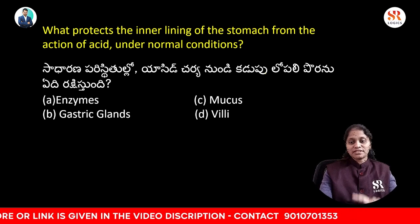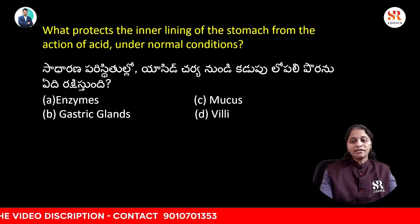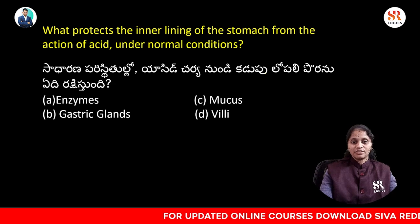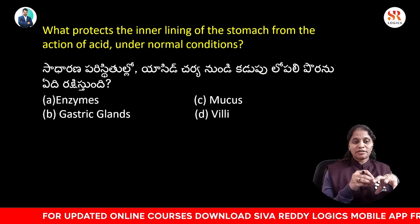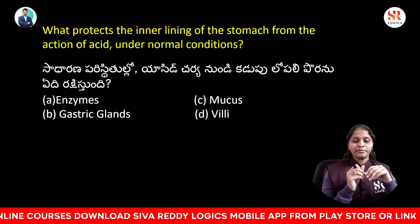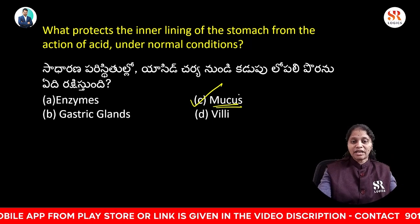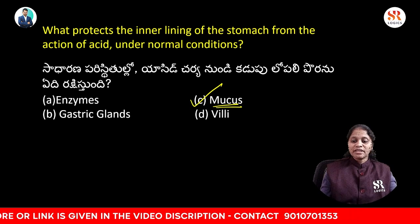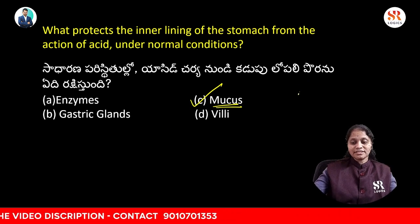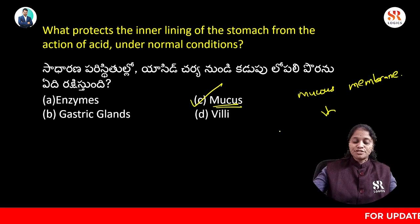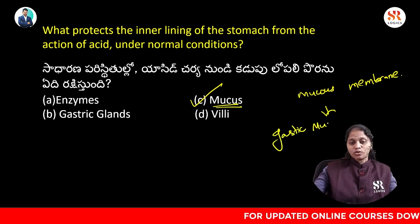What protects the inner lining of the stomach from the action of acid under normal conditions — enzymes, mucus, gastric glands, or will? The answer is mucus. Mucus protects the inner lining of the stomach from the action of acid under normal conditions. The inner surface of the stomach is lined by a mucus membrane, also known as gastric mucosa.